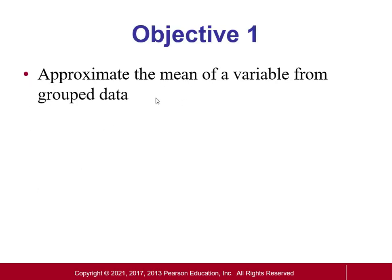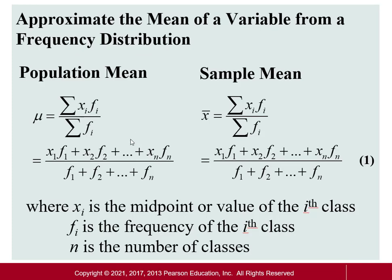We'll start with approximating the mean. Here are the formulas for population mean and sample mean. Remember: mu is your mean for your population, x-bar is your mean for your sample. The calculation is essentially the same for both. You take each data point x, multiply it by the frequency, then use the capital sigma to add all of those products up, and then divide by the total frequencies.